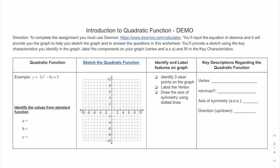The worksheet asks you to identify the values for the standard function. It's going to ask you to label the key features on the graph by identifying three points, labeling the vertex, and drawing the axis of symmetry using dotted lines. Then lastly, you will answer key descriptions to help you start understanding the key characteristics of the quadratic function.